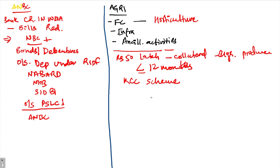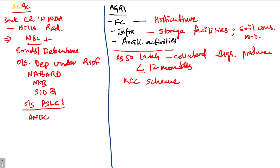For agriculture infrastructure: if a farmer is creating storage facilities such as warehouses, or is involved in soil conservation or watershed development activities, loans for these are included. The aggregate sanction limit is rupees 100 crore per borrower from the banking system.